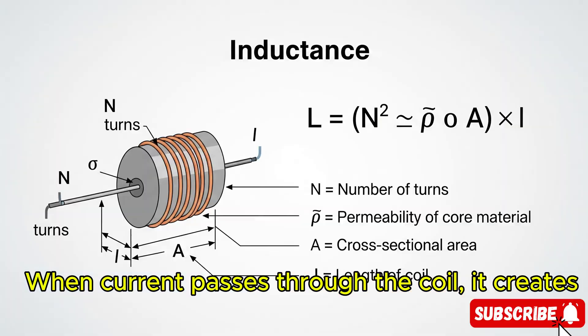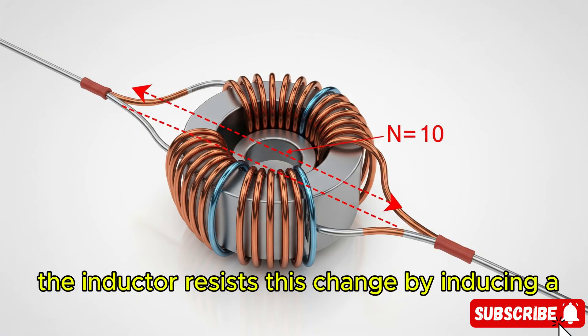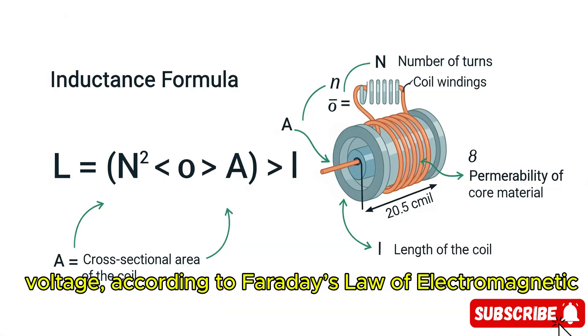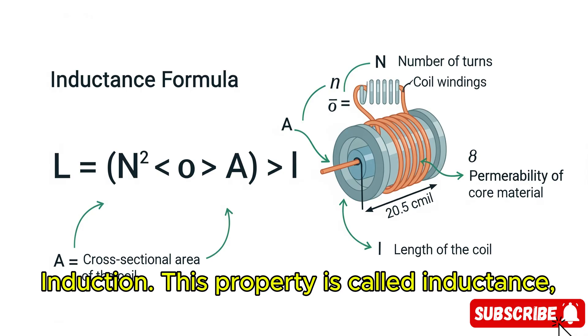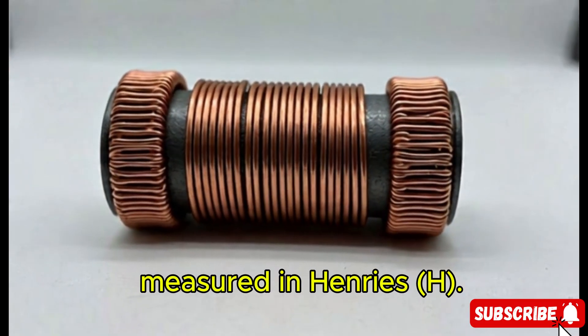When current passes through the coil, it creates a magnetic field around it. If the current changes, the inductor resists this change by inducing a voltage, according to Faraday's Law of Electromagnetic Induction. This property is called inductance, measured in henrys (H).